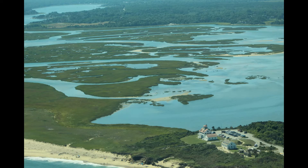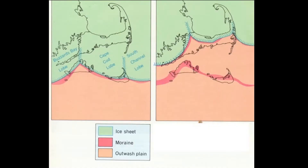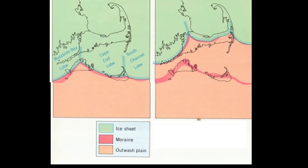Outwash plains are another glacial deposit that make up the Cape. Outwash plains were formed by glacial meltwater streams from a stagnant ice margin that brought sand and silt deposits to form broad sloping plains.